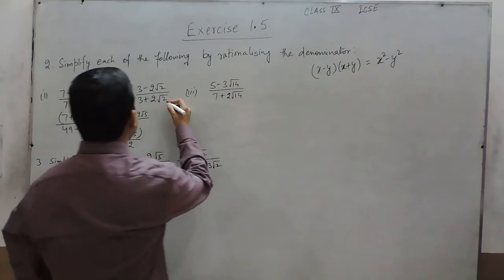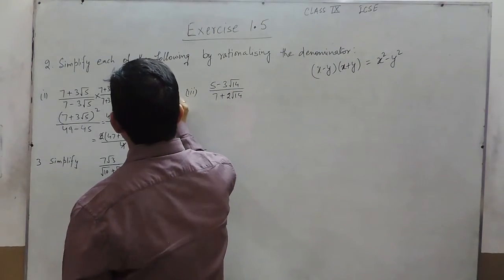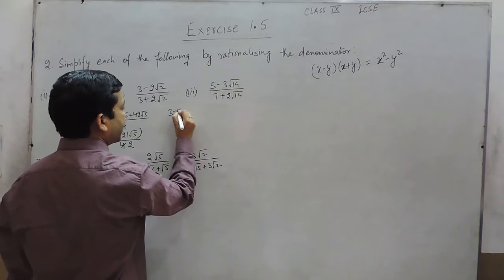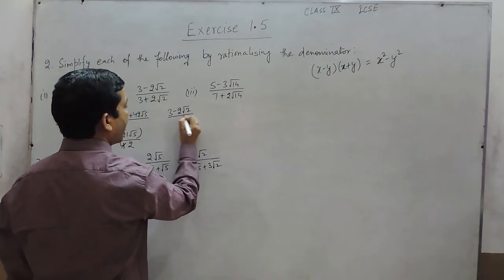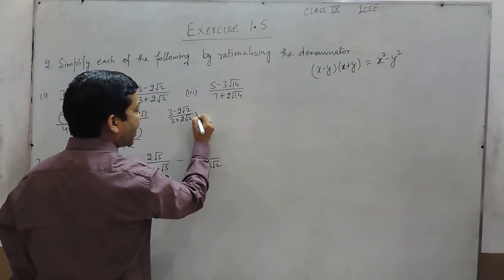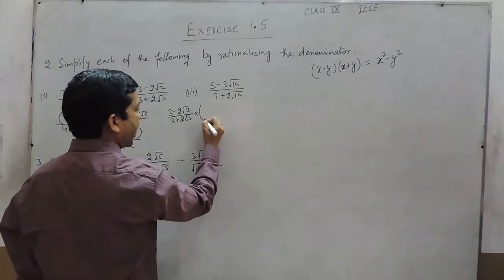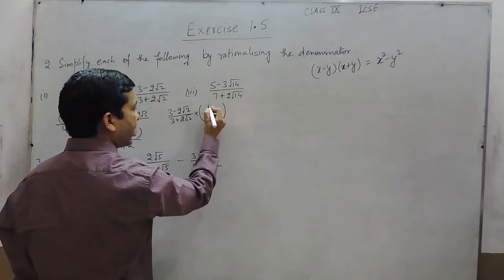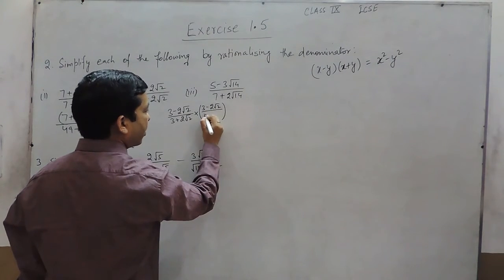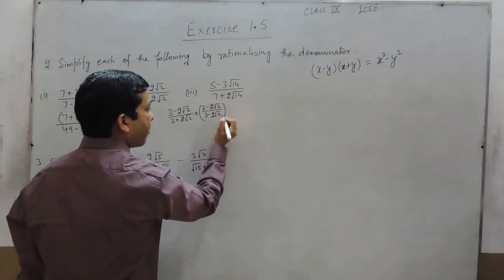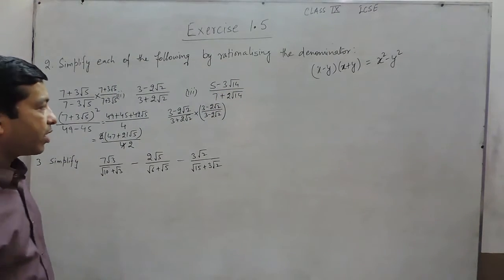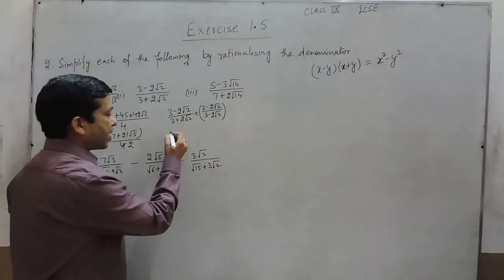Looking at the second question, we have (3 minus 2 root 2) upon (3 plus 2 root 2), which has to be multiplied by the conjugate of the denominator, that is (3 minus 2 root 2) upon (3 minus 2 root 2), because the conjugate puts it in the form x squared minus y squared.